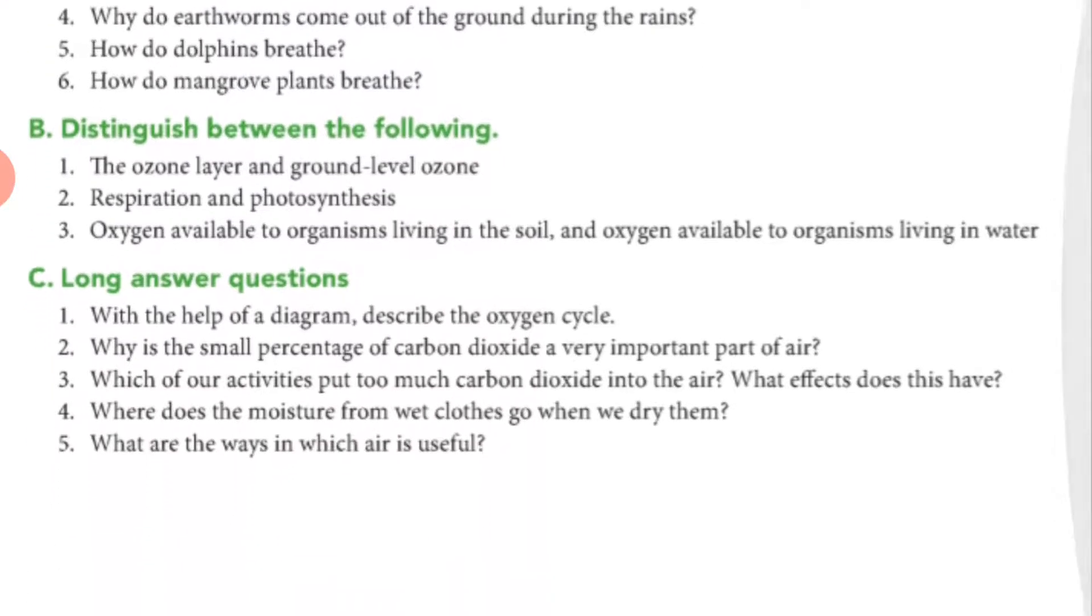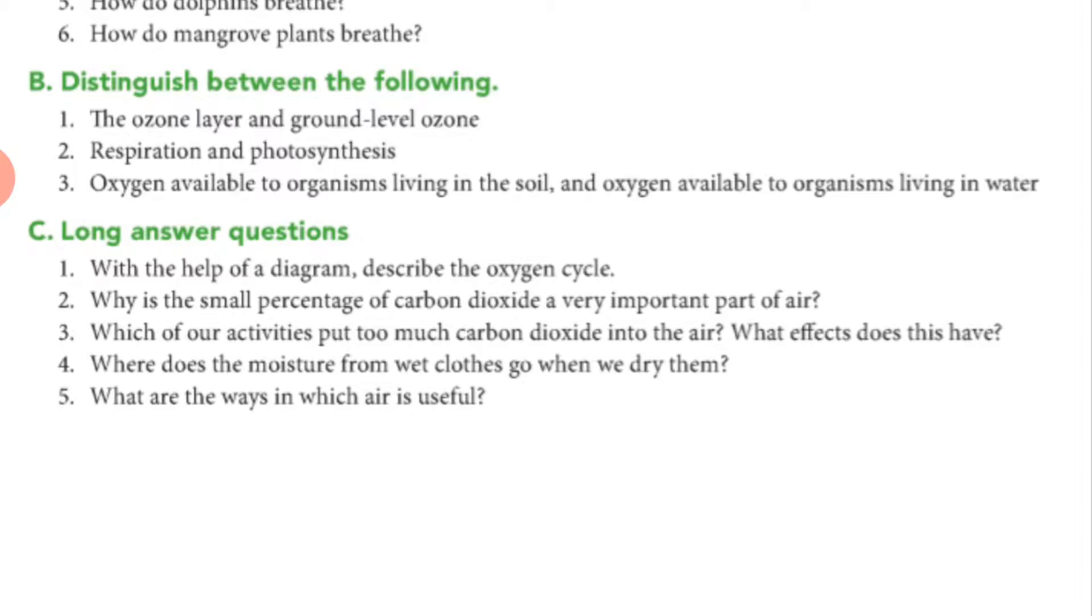Now long questions. One, draw and describe the oxygen cycle. It is already given in textbook. Then write down importance of carbon dioxide, the second question. Third one, which of our activities put too much carbon dioxide into air? It is already given in textbook. Fourth question, where does the moisture from wet clothes go when we dry them? It is given in the first or second page in the chapter. What are the ways in which air is useful? So this is given on the last page of the textbook.